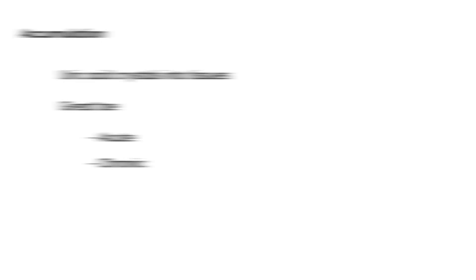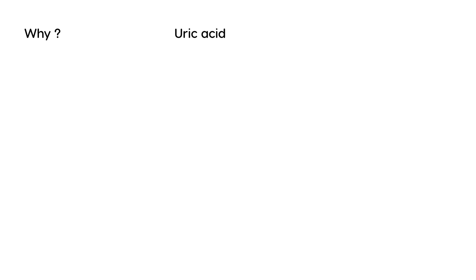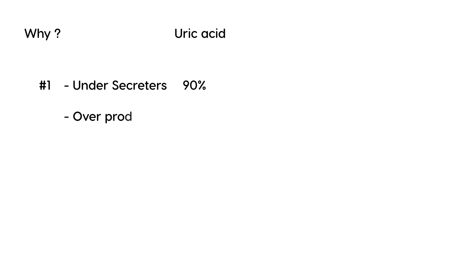So why does this happen? There are three basic reasons. The first is that the person's uric acid level is normal, but they are not able to secrete it via the kidney. These are known as under-secretors, and this is the number one cause — I think about 90% of gout cases are under-secretors.